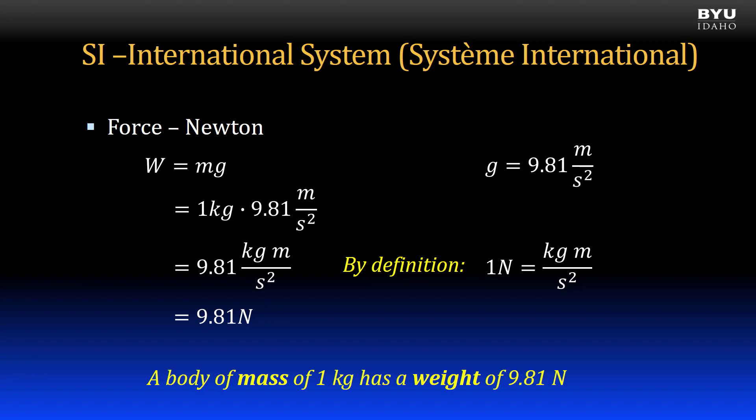In other words, if we have a body of mass and that mass is 1 kilogram, it has a weight of 9.81 newtons.